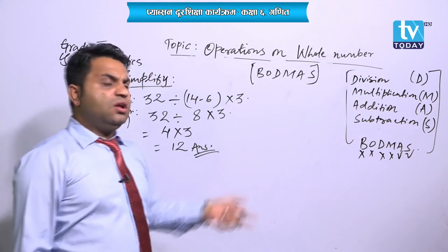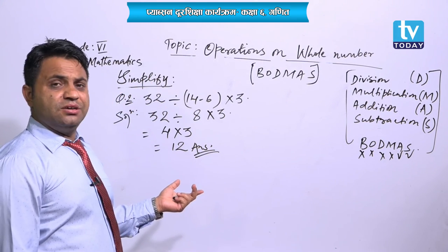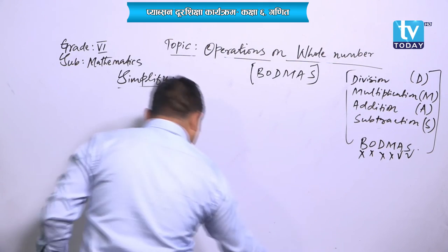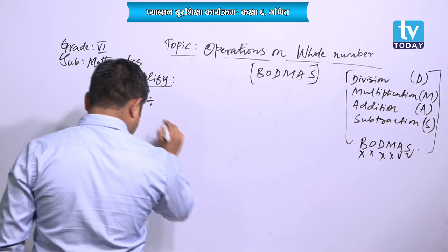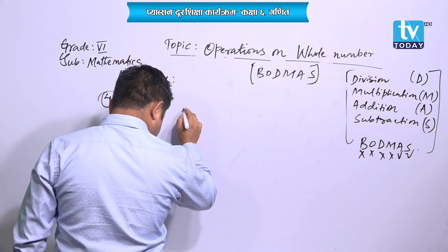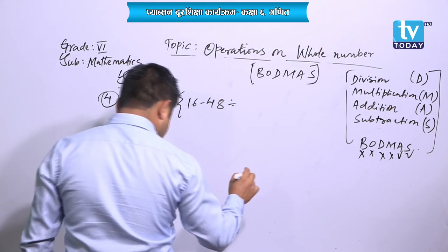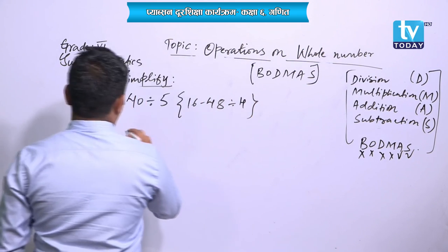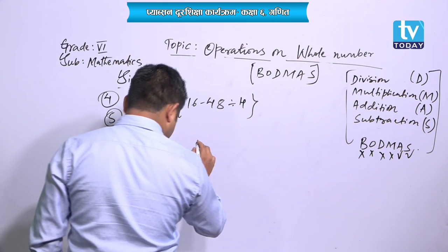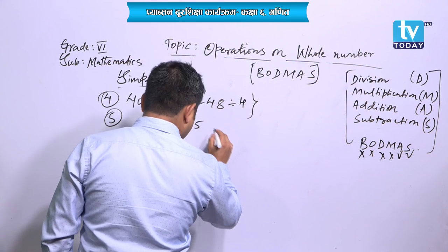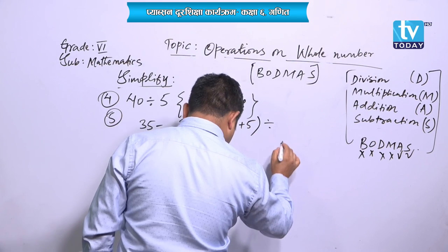If you use these rules properly, then there will not be any chances for mistake. Question 4: 40 divided by 5, bracket 16 minus 48 divided by 4. Question 5: 35 minus 15 minus 9 plus 5 divided by 3. These two questions I am leaving for you as home assignment. Use the BODMAS rule properly and you will get the exact answer.